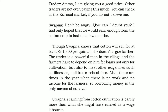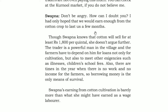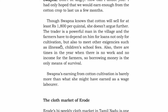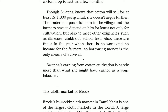The trader said, 'I am giving you a good price. You can just go to the cotton market and check.' Swapna said, 'Don't be angry, I don't doubt you. I just hoped I would get a better price.' Though Swapna knows that cotton would sell for at least 1800 per quintal, the trader is a powerful man and all farmers depend on him for loans and for contingencies like illness and school fees. There are times in the year when they have no work and no income, so they need to borrow. There is no point in arguing. Swapna's earning from cotton cultivation is barely more than what she would earn as a daily wage laborer.